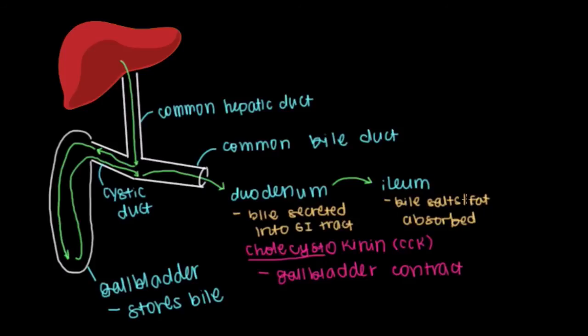We talked about what happens to fats once they're absorbed in the ileum when we discussed the small intestine. But what happens to our bile salts? Well, the bile salts, after they've been absorbed in the ileum, are going to circulate right back to the liver to undergo this process all over again.